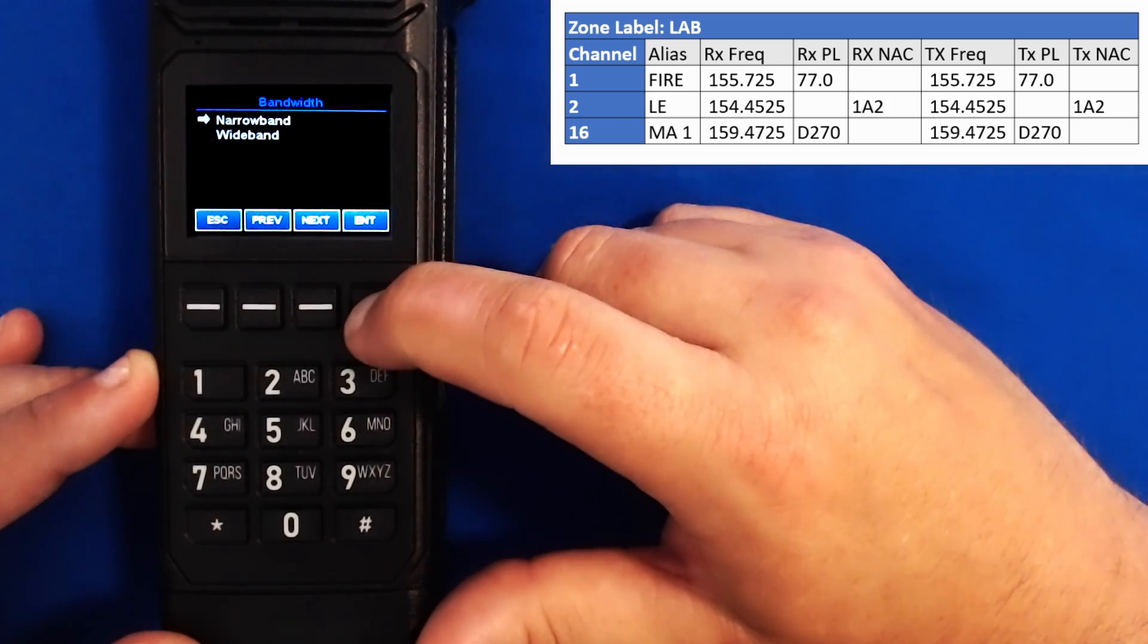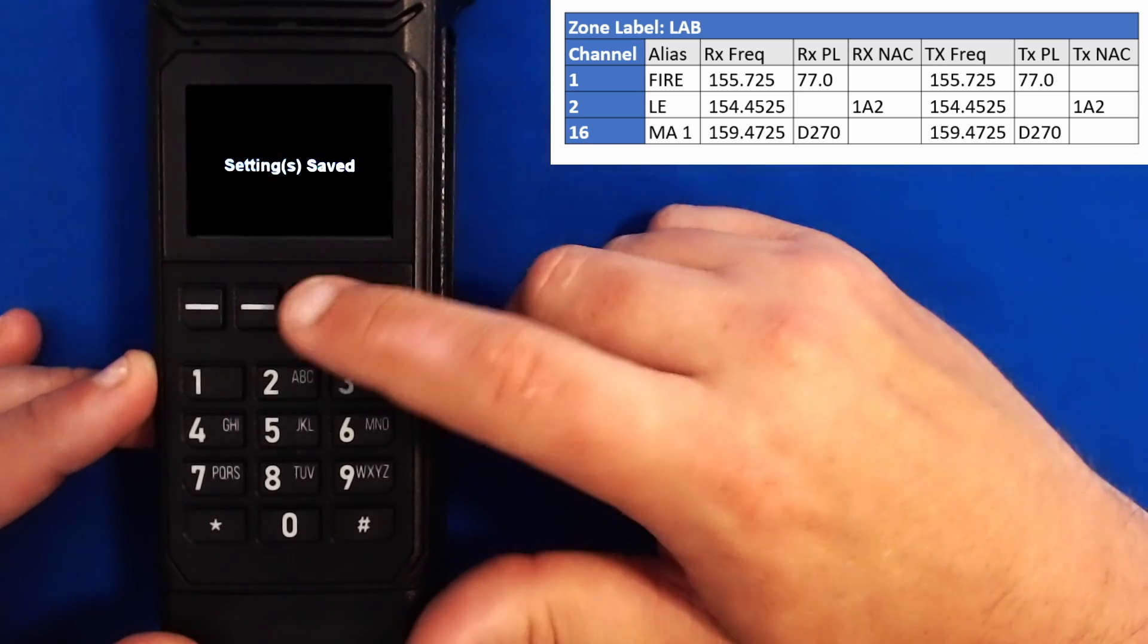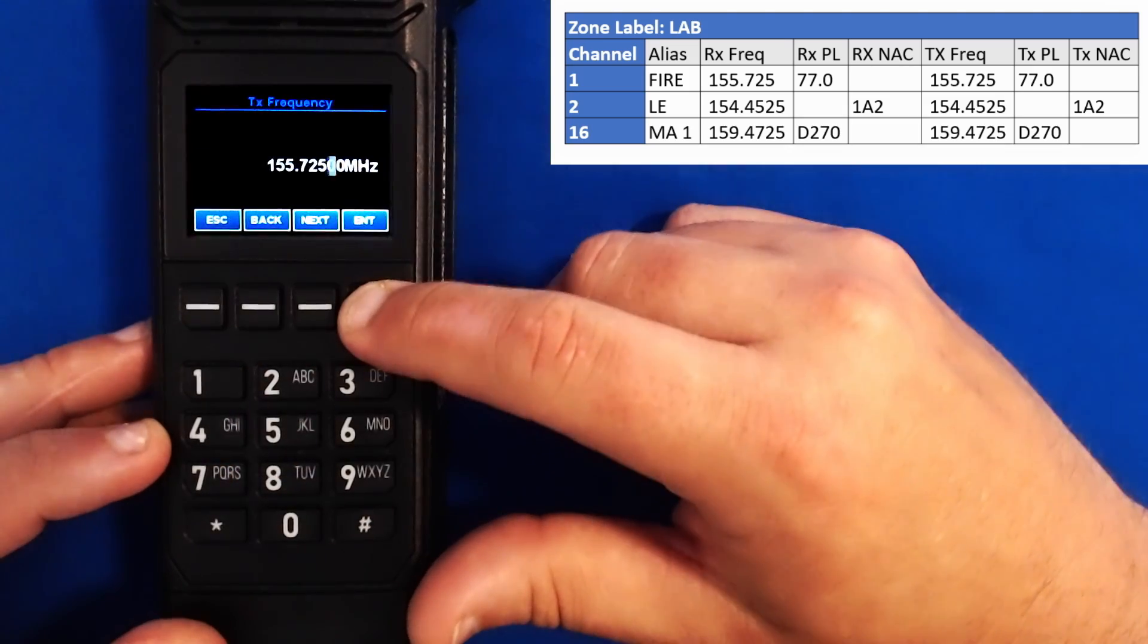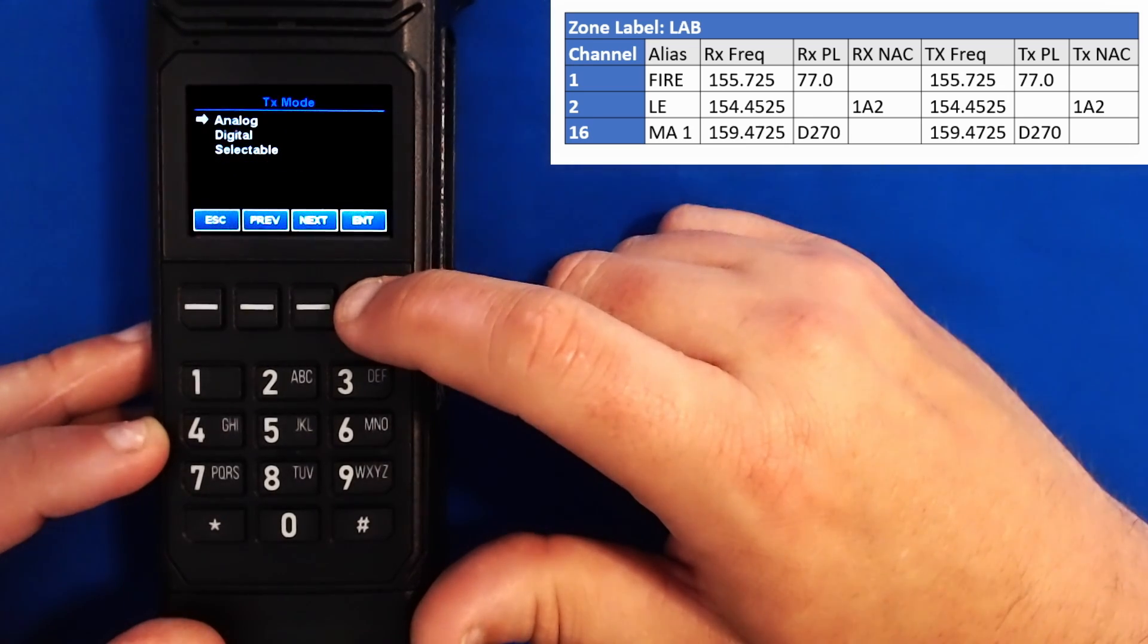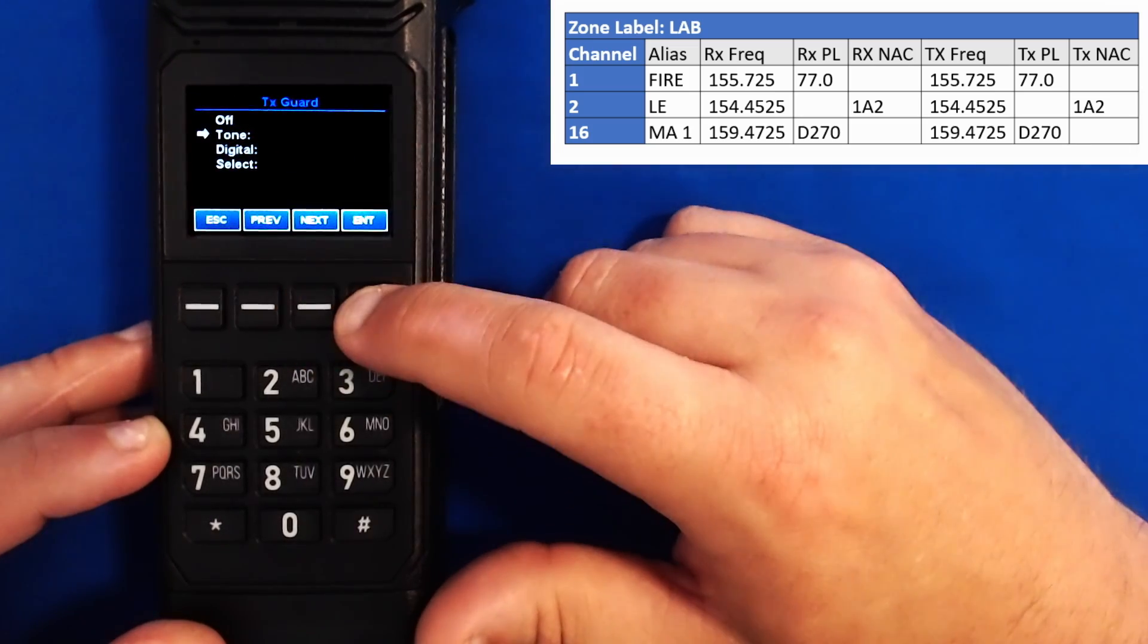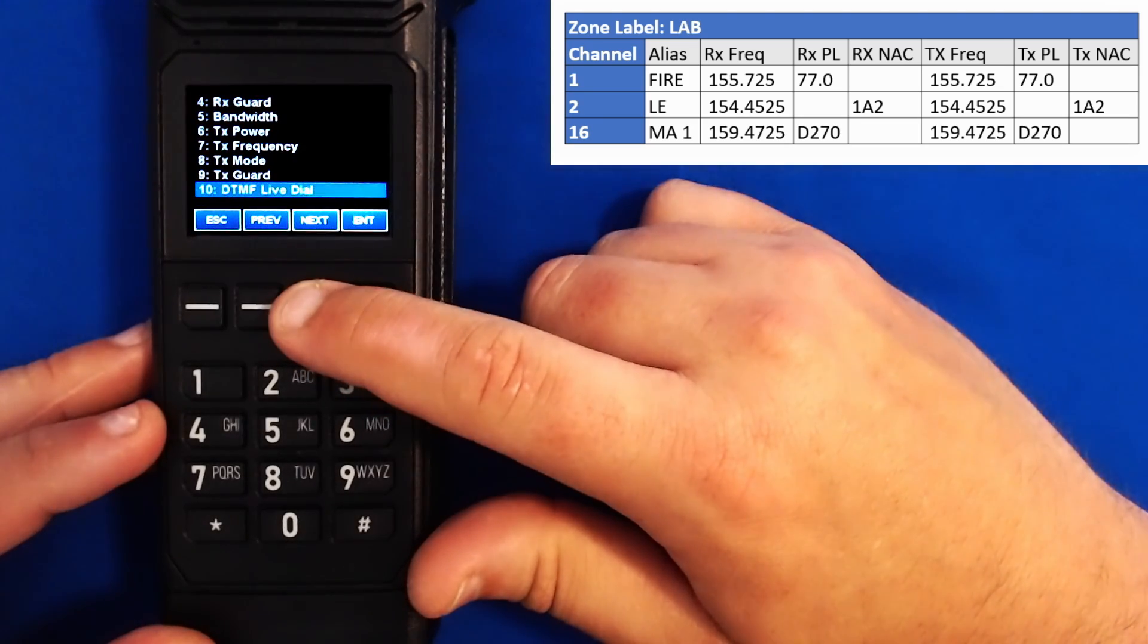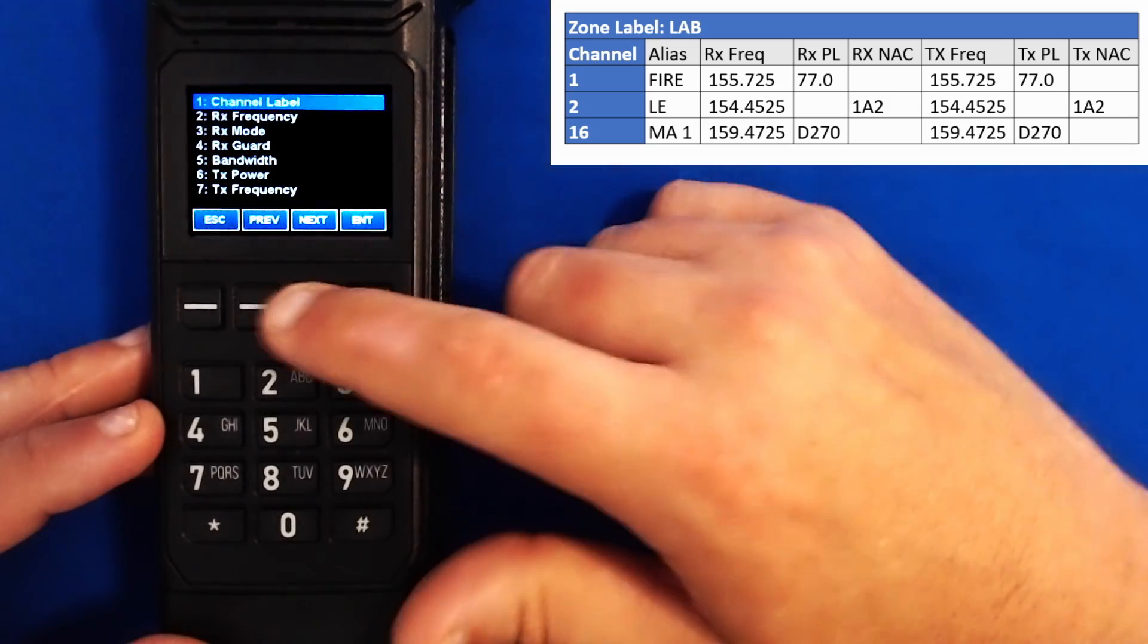Next I'll go to my bandwidth. This should always be narrow band. My transmit power, high is good. My transmit frequency. I'll press clear and type in 155725 and press enter. I can scroll down to my transmit mode. I have a PL tone on my transmit, so that means it's analog. My transmit guard, I will set under tone. Clear, 077. My DTMF live dial is fine. And if I hit next again, I'll take back to channel label, meaning I've gone through all of the items. This channel is done. I'll hit escape.